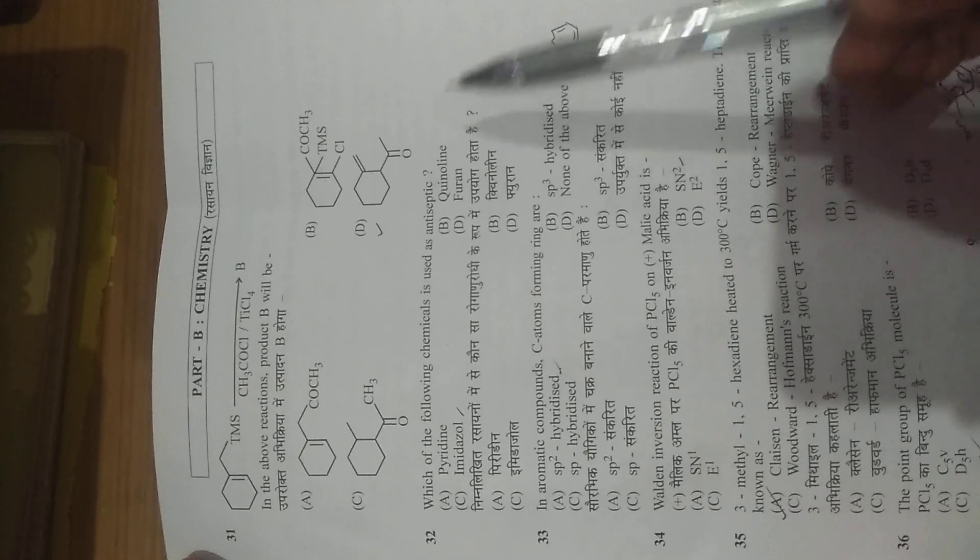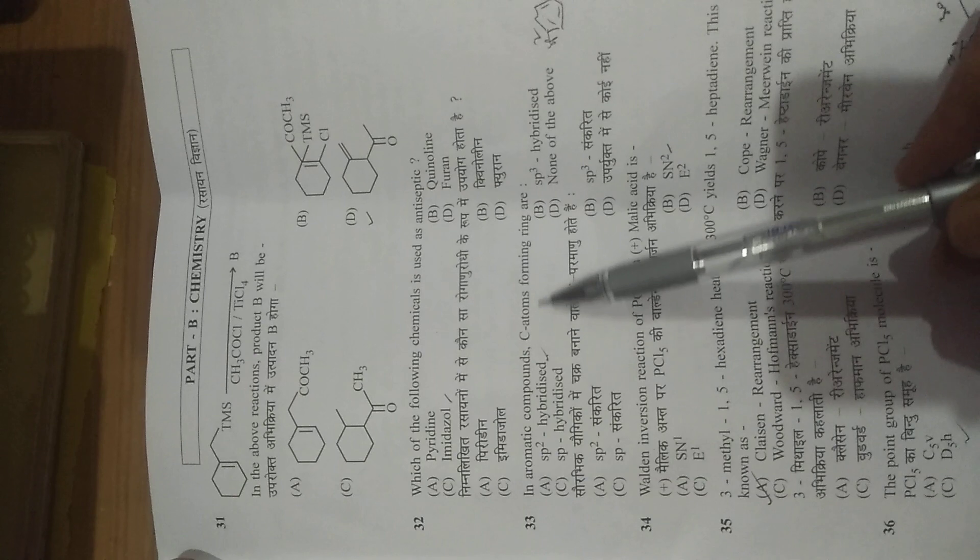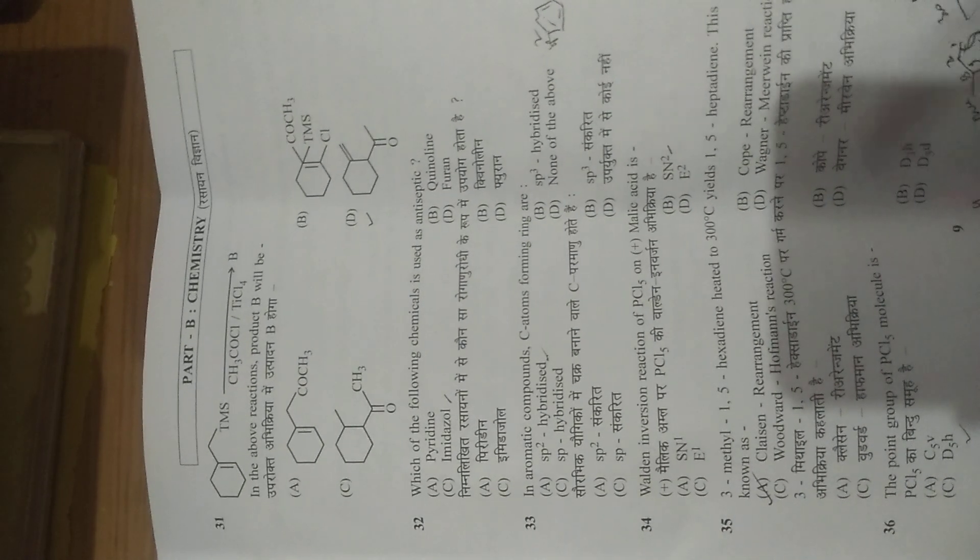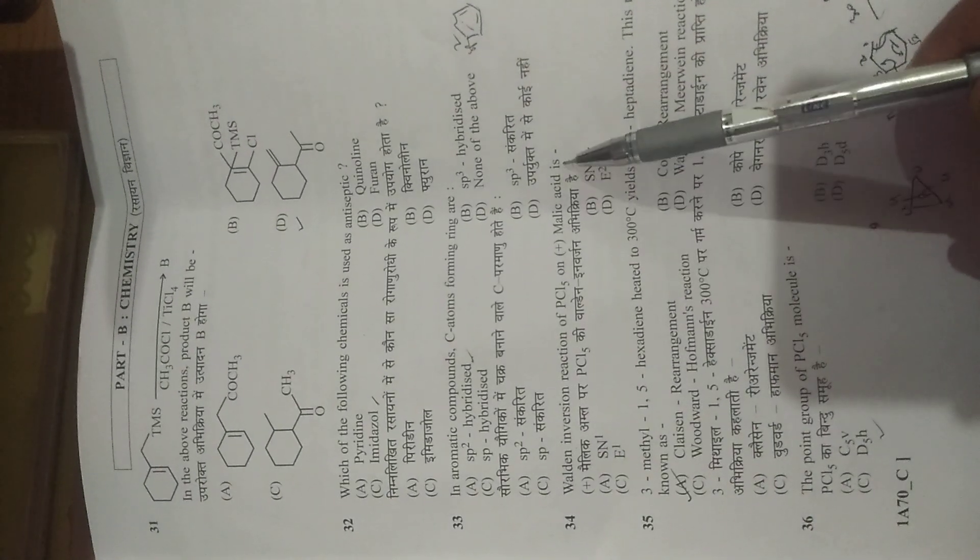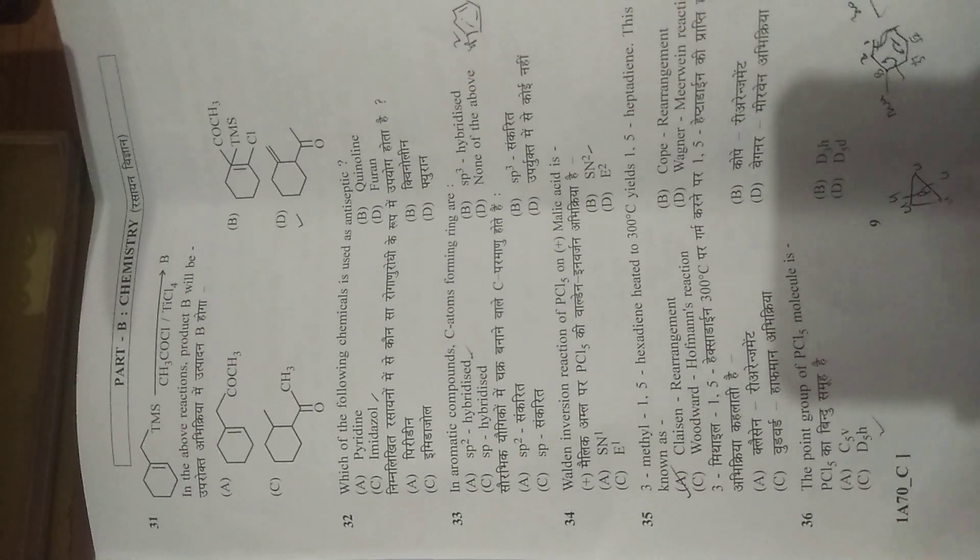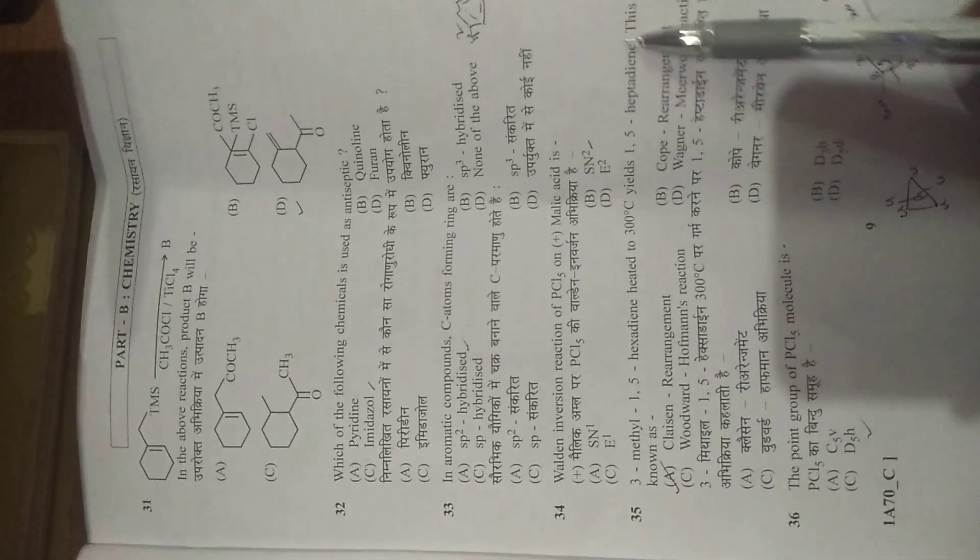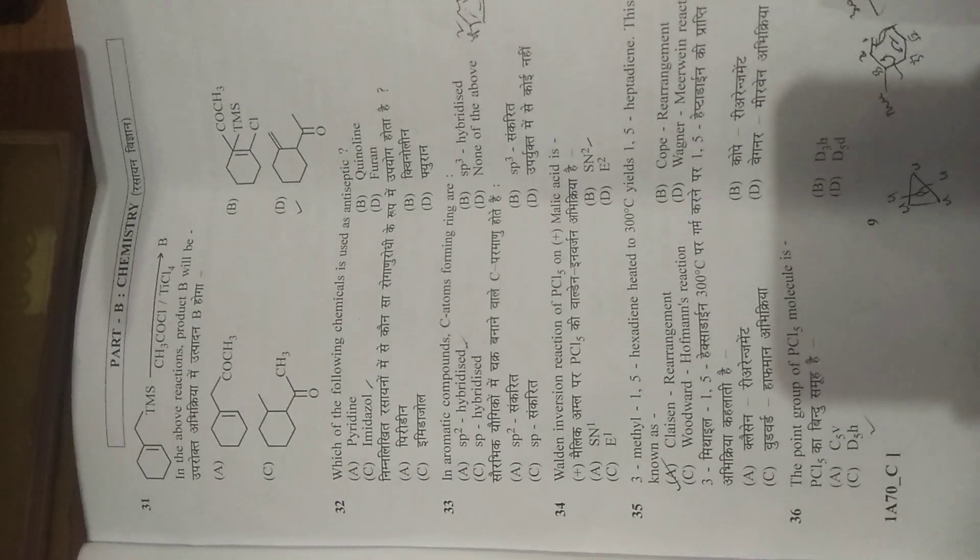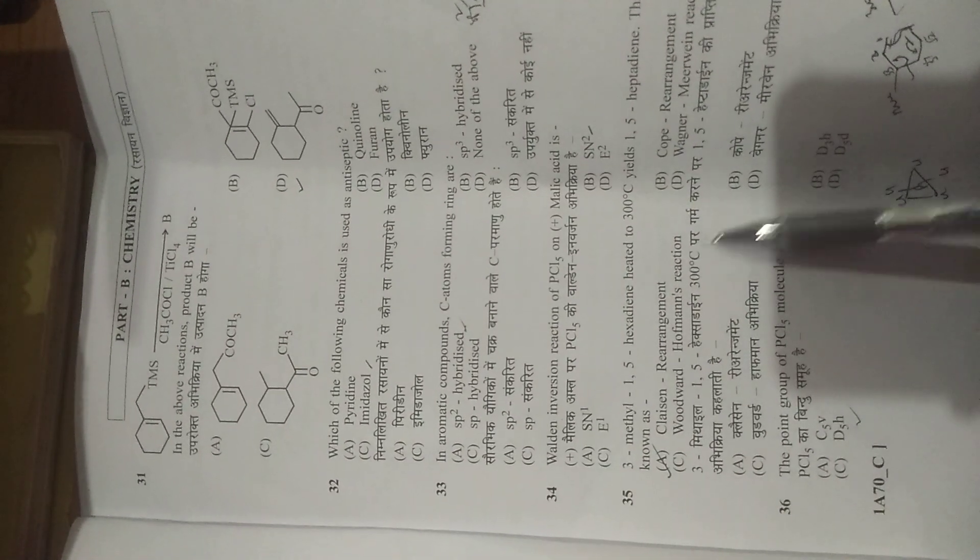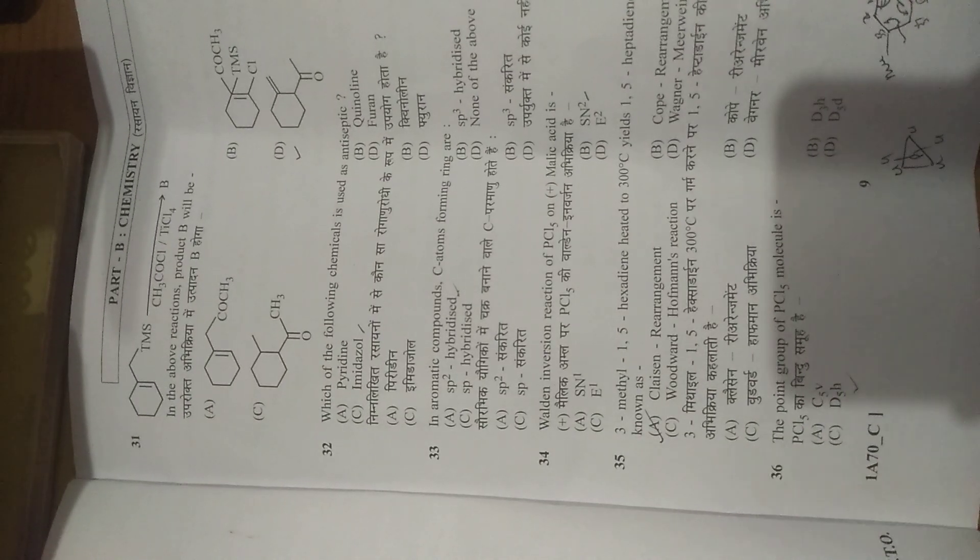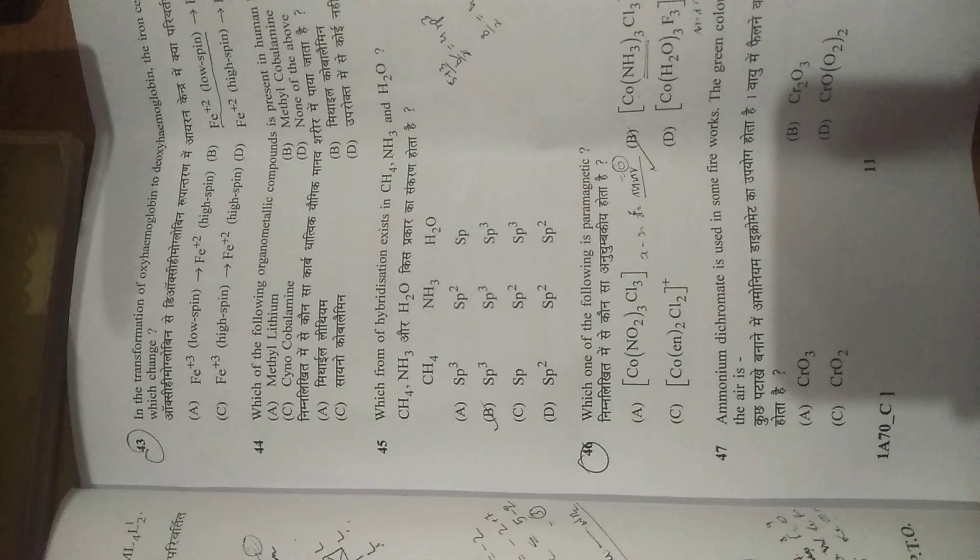Next is: which of the following chemical is used as antiseptic? We know that imidazole is a good antiseptic. Then, in aromatic compounds, the carbon atoms forming rings are sp2 hybridized. Walden inversion reaction of PCl5 with malic acid is SN2 type. Then 3-methyl-1,5-hexadiene heated to 300 degrees Celsius forms 1,5-heptadiene. I think it is a sigmatropic rearrangement, a 3,3-sigma tropic shift. The point group of PCl5 is D5h.